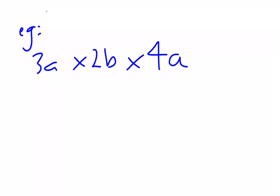So we have a look at an example. 3a times 2b times 4a. Now I'll add an extra line of working in here just to show you why this works. 3a is 3 times a, times 2b, which is 2 times b, times 4a, 4 times a. We know that we can multiply in any order.